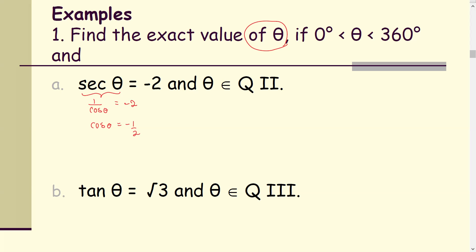Now we are going to use the reference angles. Remember the reference angle is always acute. To find the reference angle theta-hat, we ignore the negative sign. That means the cosine of the reference angle theta-hat is 1 over 2. We can use the calculator by rewriting theta-hat as the inverse cosine of 1 over 2, then hit the inverse cosine key and enter 1 over 2.